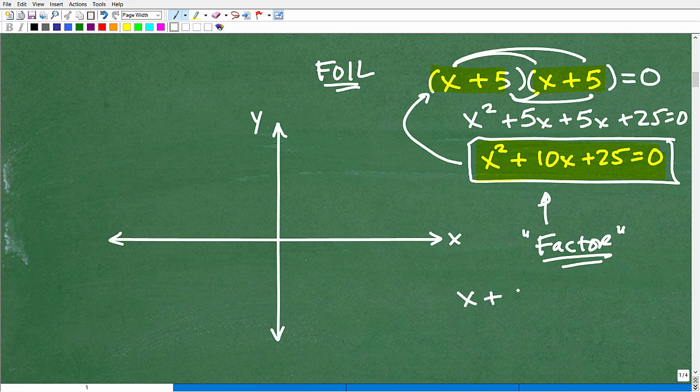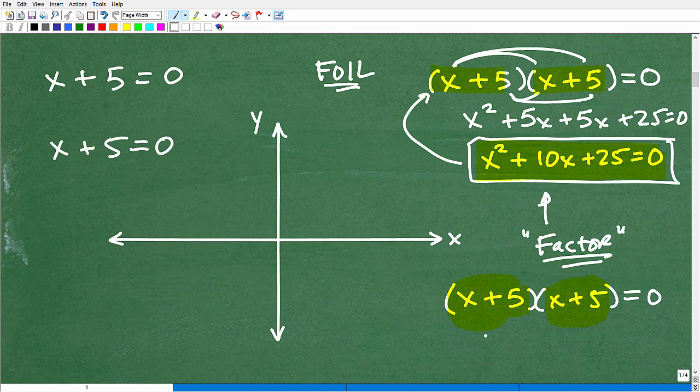So what do you do with the factors? x plus 5 times x plus 5 is equal to 0. So we love factors because what we're saying is this thing times this thing is equal to 0, all right? This is an illustration of something called the 0 product property. So something times something else is equal to 0. The only way that can happen is if this thing is equal to 0 or this thing is equal to 0. So what we want to do is set each factor equal to 0 and solve. So x plus 5 is equal to 0, and x plus 5 is equal to 0. We're going to set each of those linear factors equal to 0, and when we solve, we get x is equal to negative 5, and x is equal to negative 5.